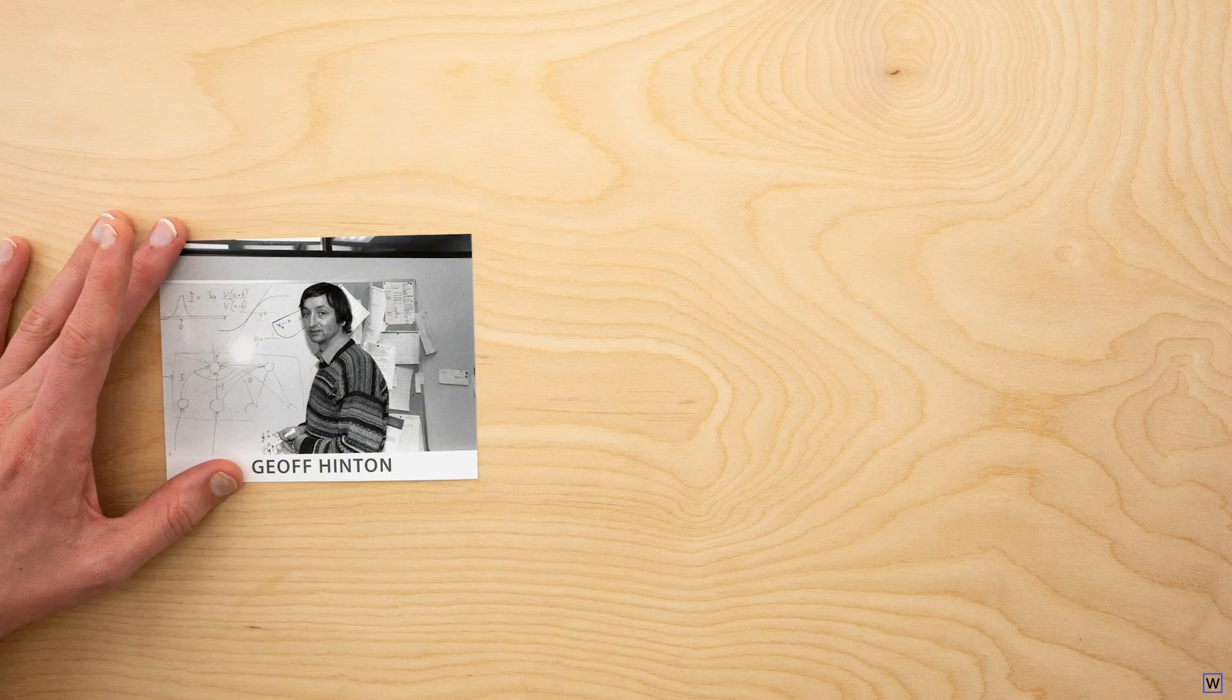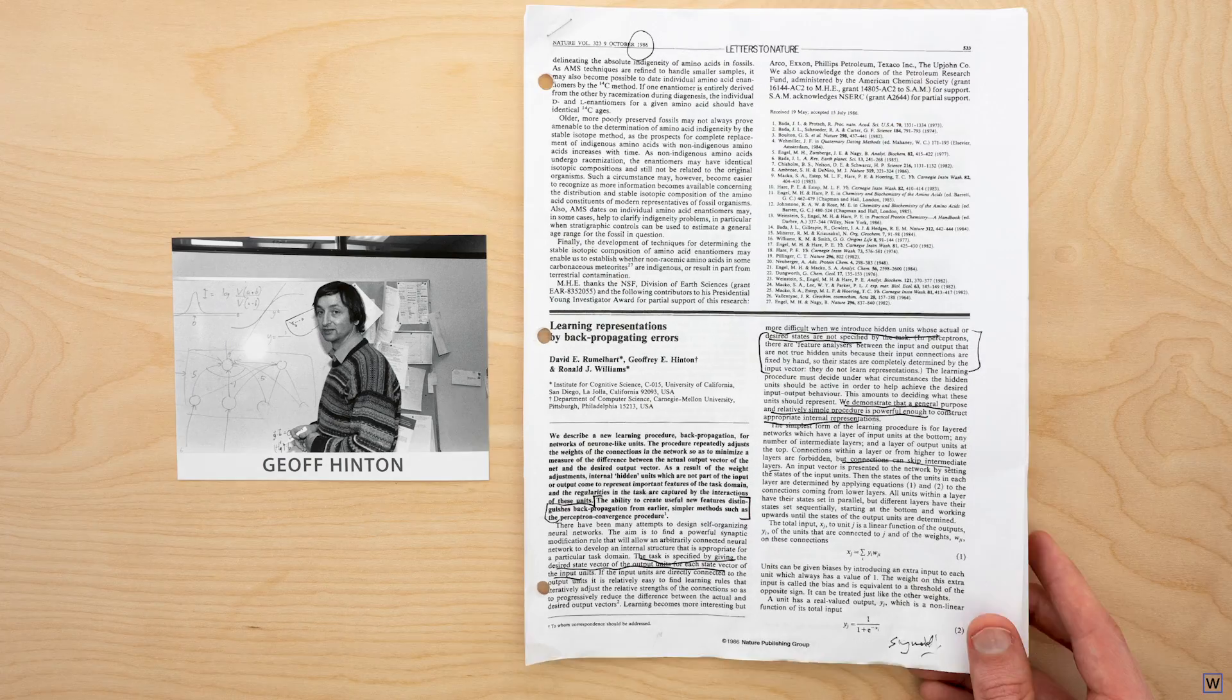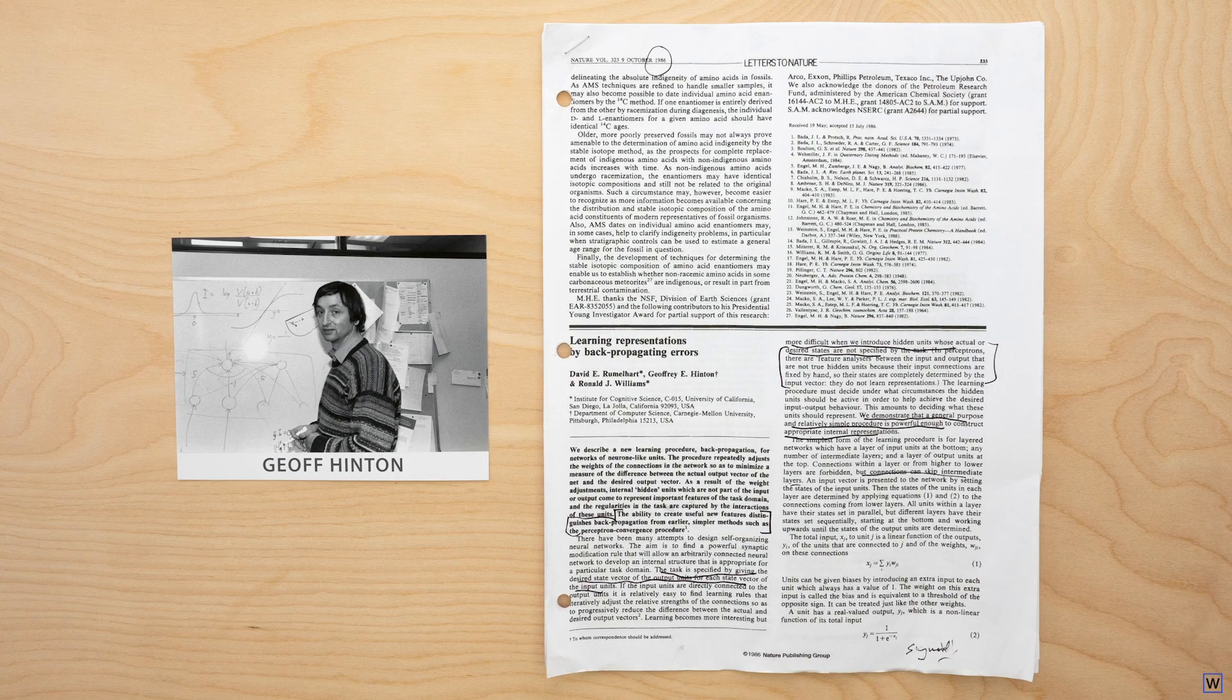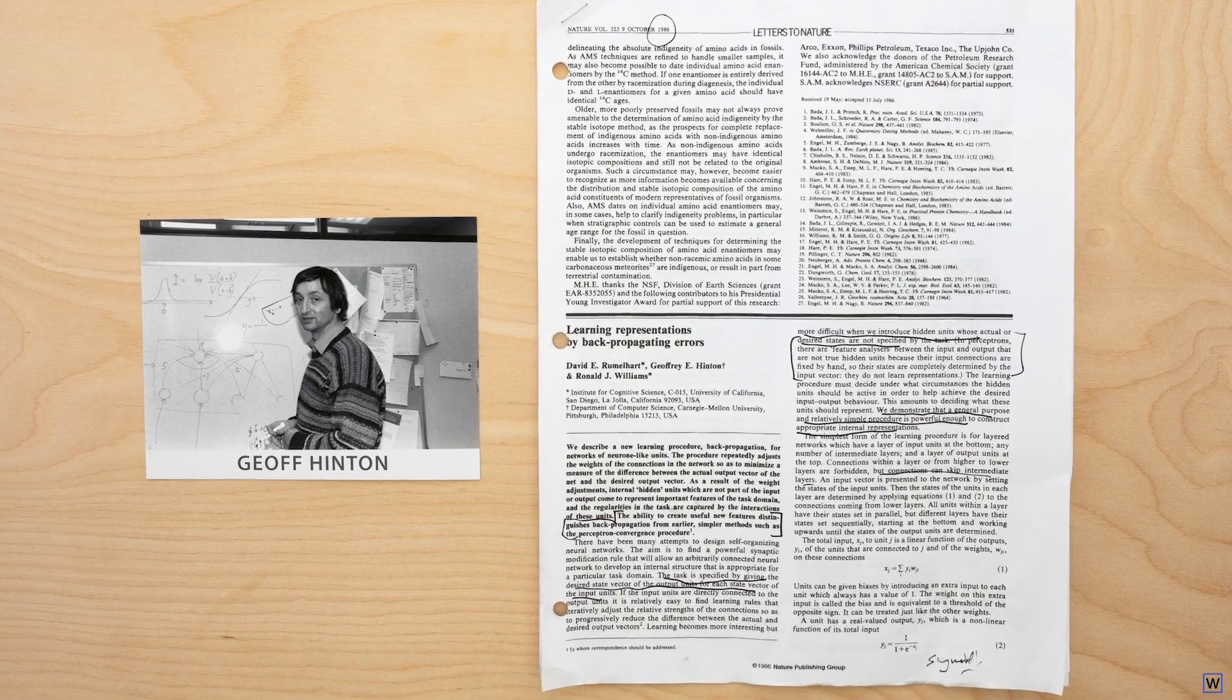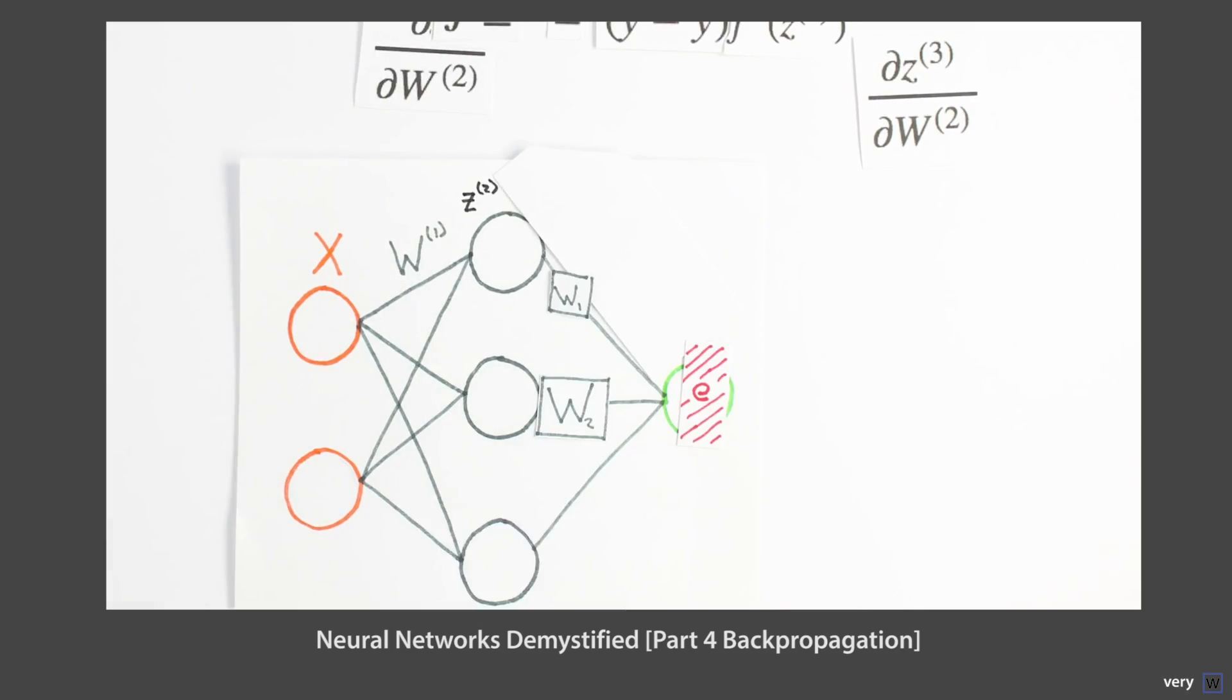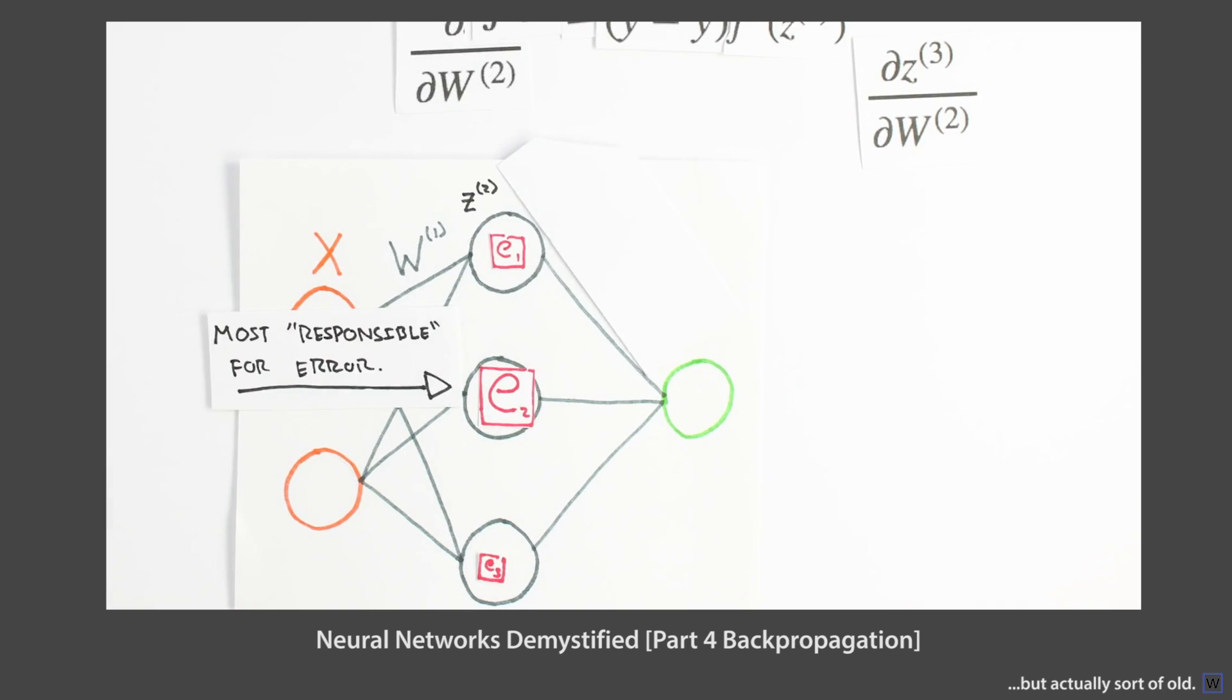Now, here's where it gets interesting. In 1986, the same year the NavLab vehicle was built, another group at Carnegie Mellon, led by Professor Jeff Hinton, published a paper entitled Learning Representations by Backpropagating Errors. This paper reignited interest into artificial neural networks. These mathematical models are loosely based on how our brains work, and Hinton's paper presented a new way for artificial neural networks to learn from data.